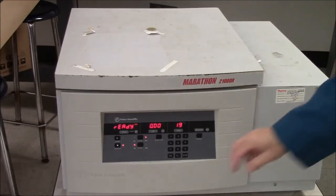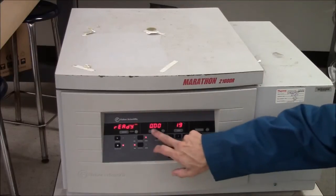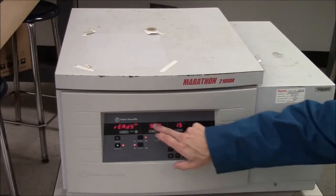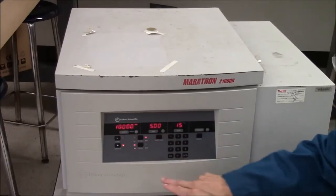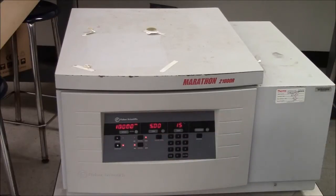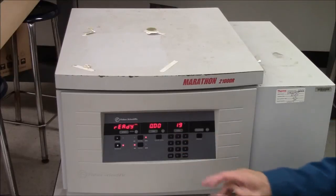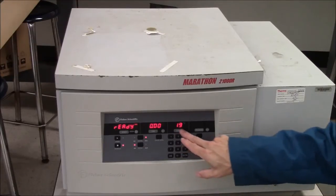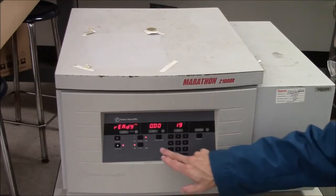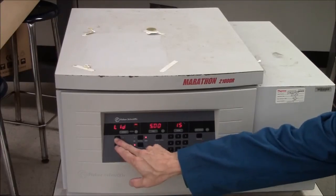And it has a big lid for the entire machine. So now I'll set the conditions for the spin. Time: five minutes. Speed: 10,000 RPMs. I could set a temperature. It's a refrigerated centrifuge. In this case, there's not any need for it to be refrigerated. Press the start button.